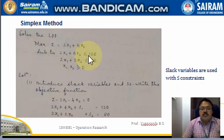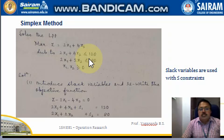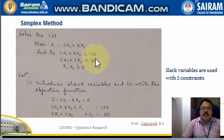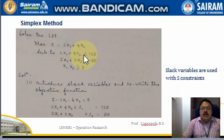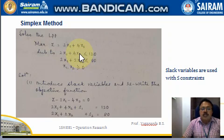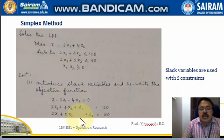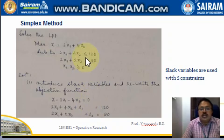Since we have less than or equal to sign, the slack variables will be added. In the case of greater than or equal to, we call them surplus variables — meaning the left-hand side is in excess of the right-hand side, so something is subtracted to make them equal. Now we are introducing slack variables s1 and s2.